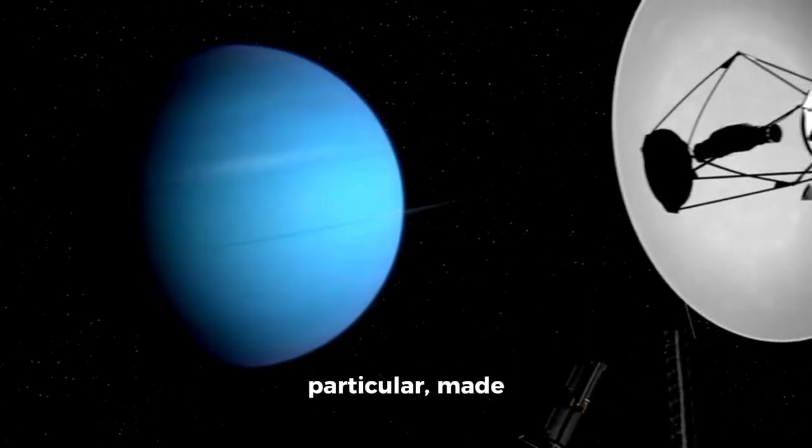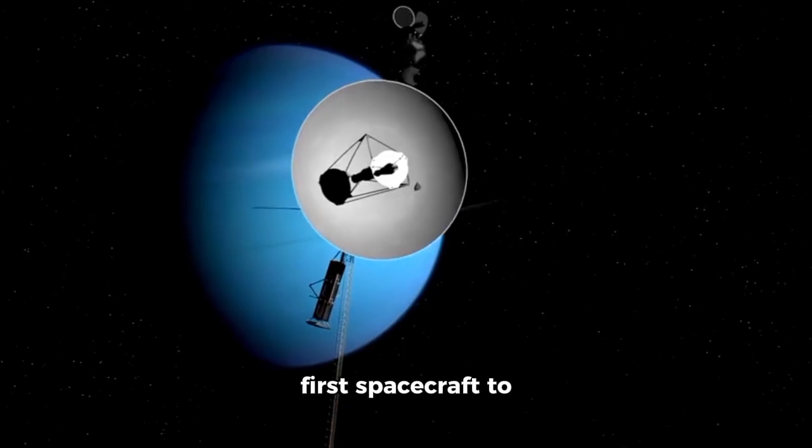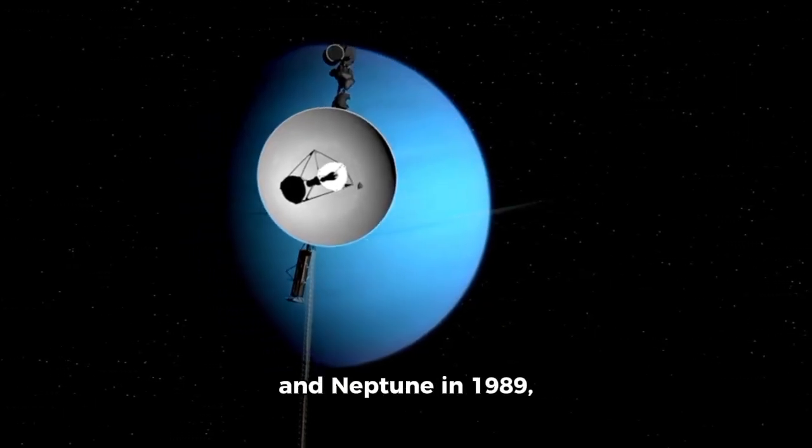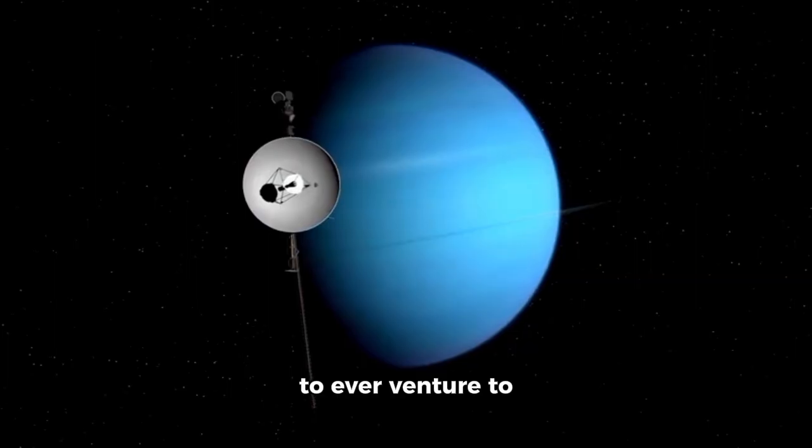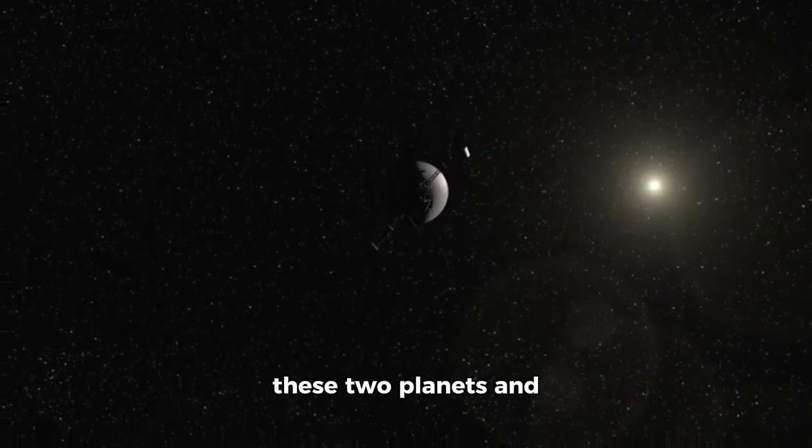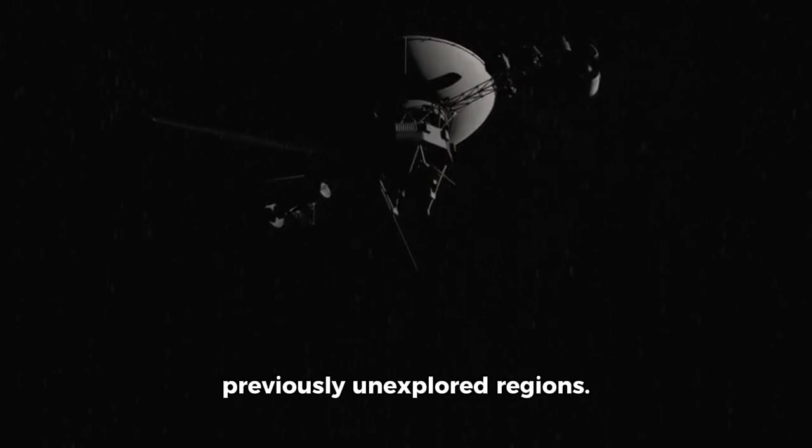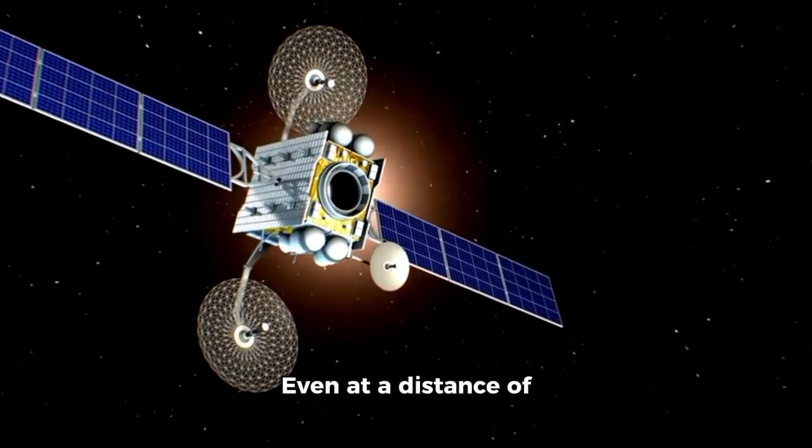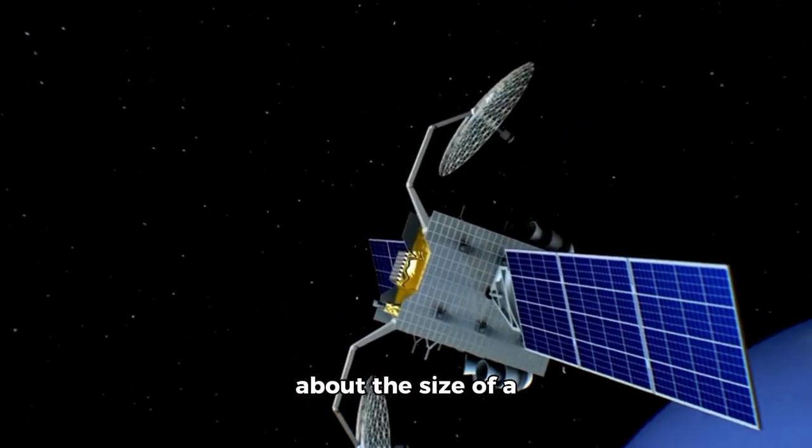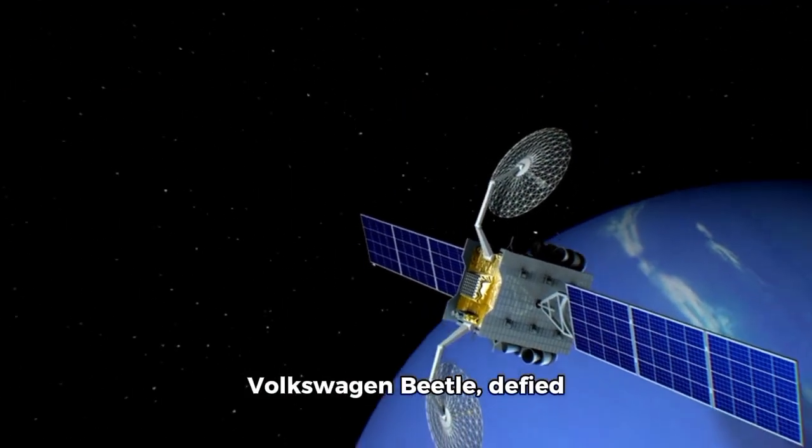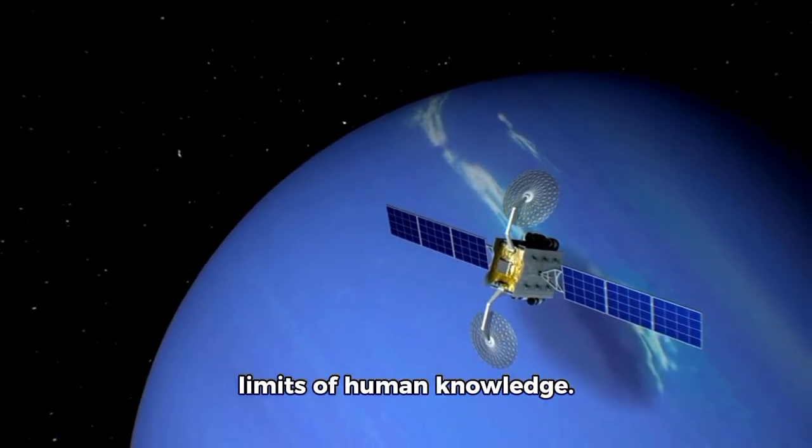Voyager 2, in particular, made history by becoming the first spacecraft to visit Uranus in 1986 and Neptune in 1989, becoming the only probe to ever venture to these two planets and sending back cutting-edge findings from previously unexplored regions. Even at a distance of more than 14 billion kilometers from Earth, these robust probes, about the size of a Volkswagen Beetle, defied all expectations and continue to push the limits of human knowledge.